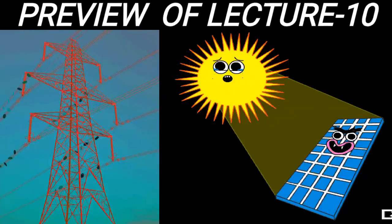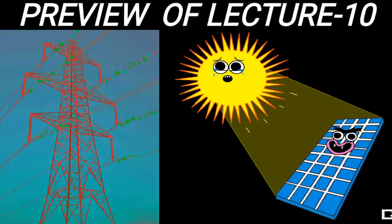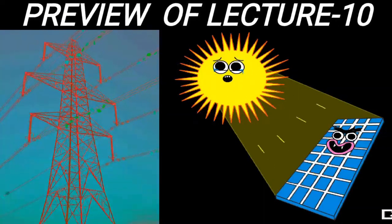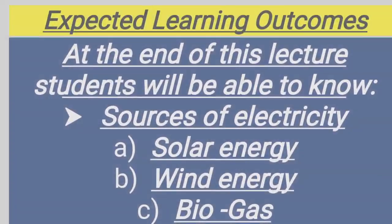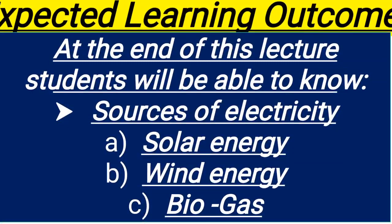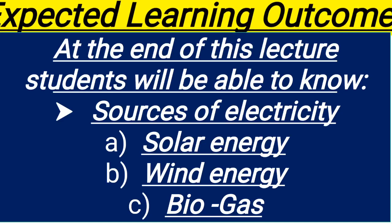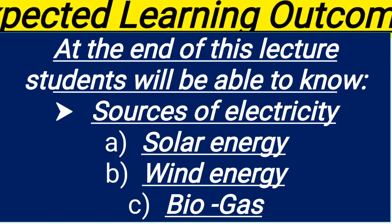At the end of this lecture, you will be able to know the main sources of electricity and how they are useful for us. Previously, we discussed that in Pakistan electricity is produced in three major ways: hydroelectricity, thermal electricity, and nuclear electricity.